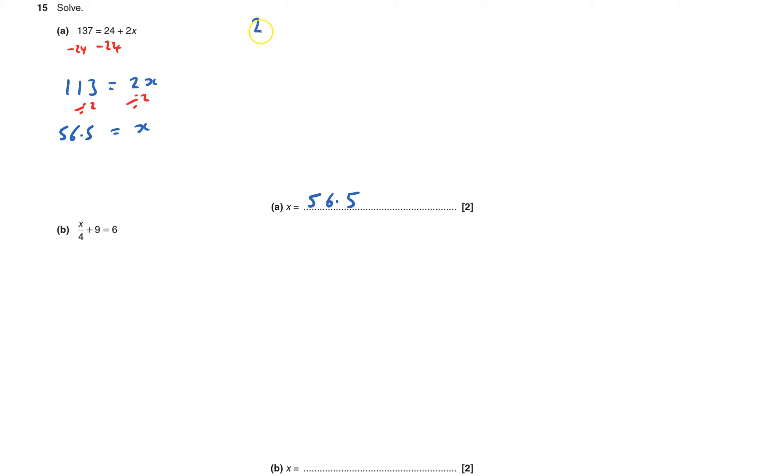Some people don't like doing it that way, some people actually like writing it around 2x plus 24 equals 137. There's no reason why you can't do it like that and then you do exactly the same thing, take away 24 from that side, take away 24 from that side.